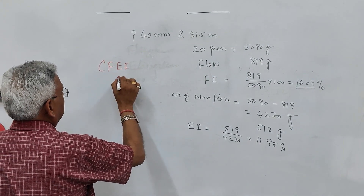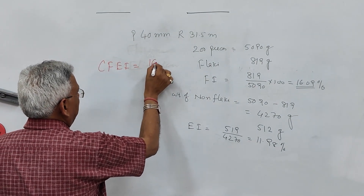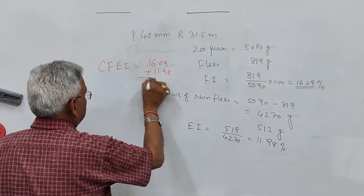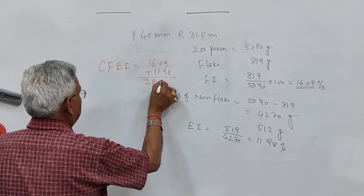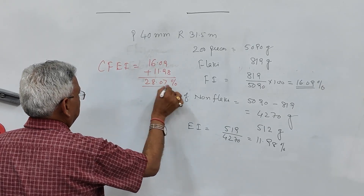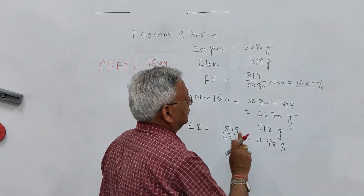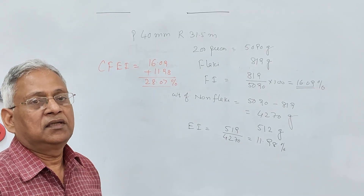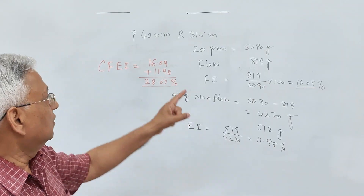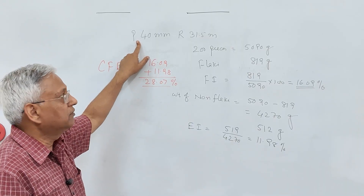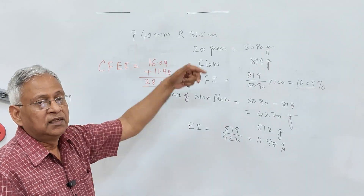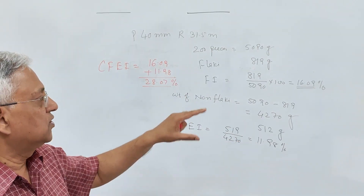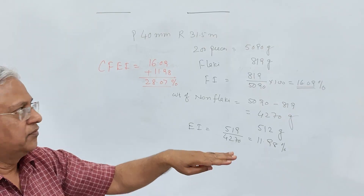The Combined Flakiness Elongation Index (CFEI) is 16.09 + 11.98 = 28.07%. That is how you calculate the CFEI. However, this was only for one size — passing 40 mm retained on 31.5 mm. You must repeat the same procedure for all other sizes in your sample.